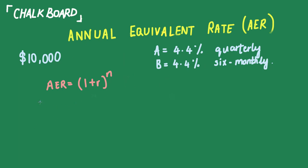Let's look at Firm A. 4.4% quarterly roughly equates to 1.1% for each period. That's the interest paid for each period. First, we convert this rate into decimals, giving us 0.011.